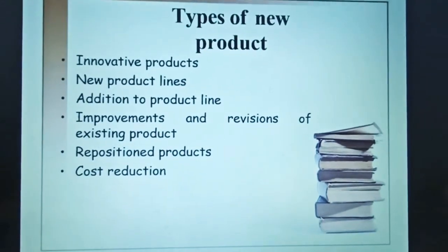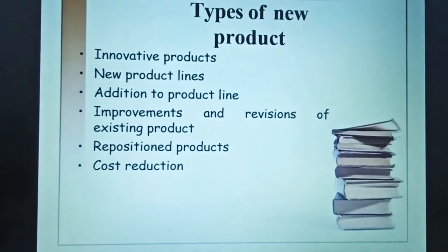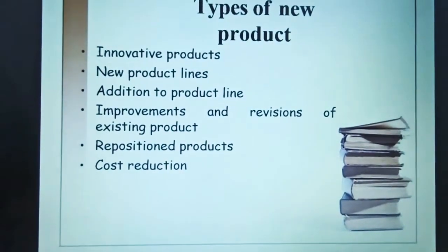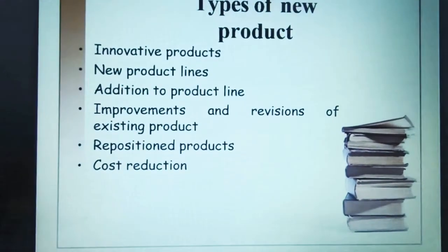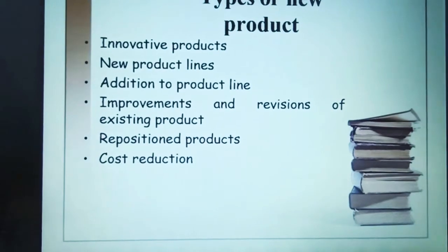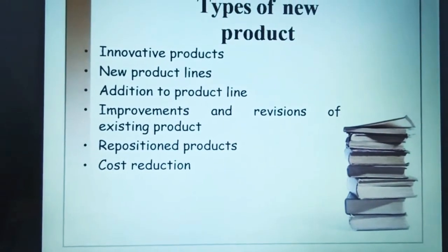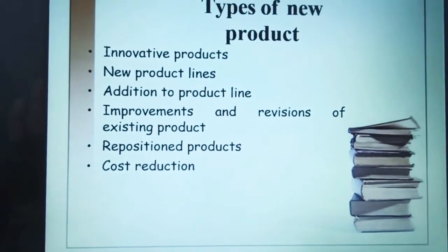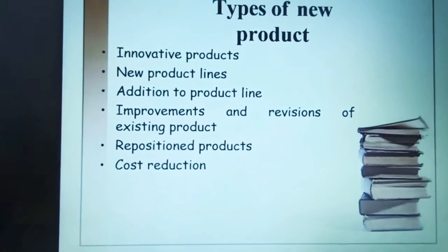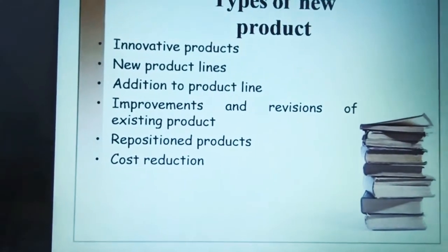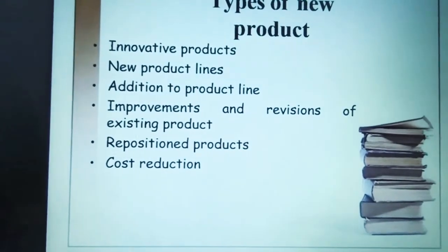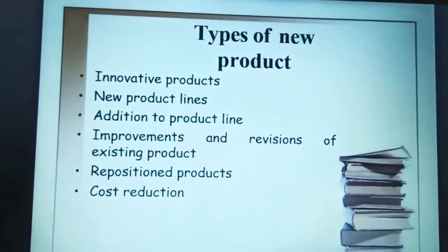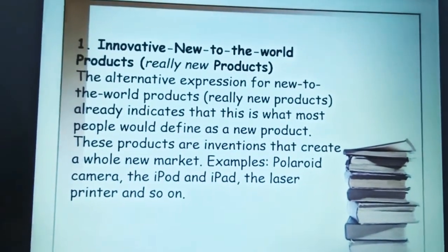The types of new products include: innovative products, new product lines, additions to the product line, improvement and revision of existing products, repositioned products, and cost reductions. If you are doing something innovative, changing your product lines, improving existing products, repositioning, or reducing cost — all of these are considered new products.